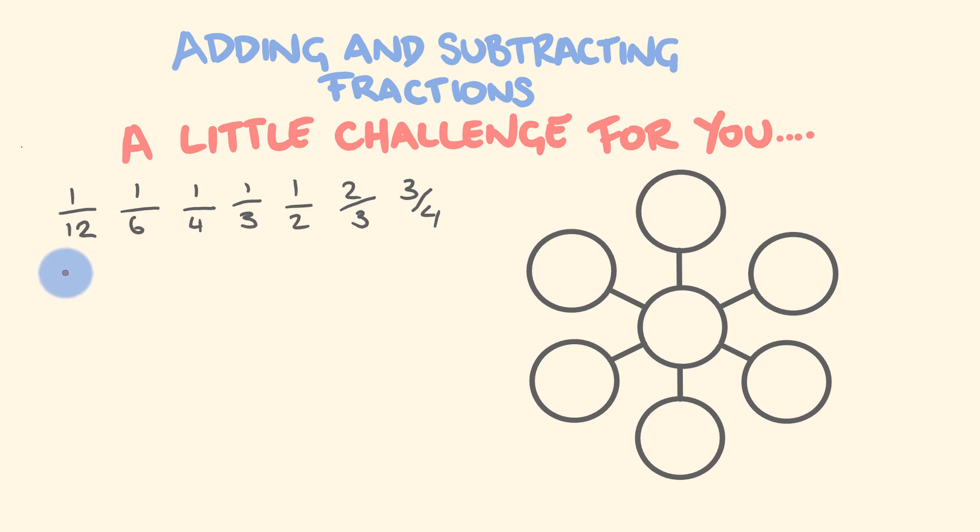So if we were to change these into equivalent fractions, this would become 1 twelfth, this would become 2 over 12, this would become 3 over 12, this would become 4 over 12, this would become 6 over 12, this would become 8 over 12, and this would become 9 over 12.